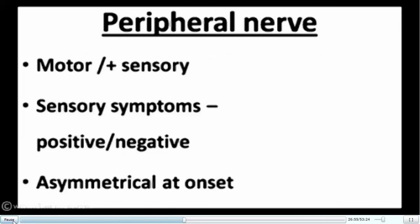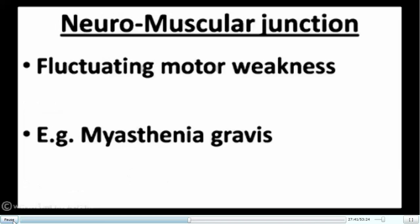At the peripheral nerve level, there is usually a mix of motor, sensory, and autonomic symptoms. Sensory symptoms are divided into positive phenomena — tingling, numbness, paresthesias, allodynia — and negative phenomena — loss of sensation. Peripheral neuropathy is typically asymmetrical at onset and eventually becomes symmetrical. The key principle is that the greater the distance from the spinal cord, the greater the damage — hence peripheral nerve disorders classically start distally and progress proximally.